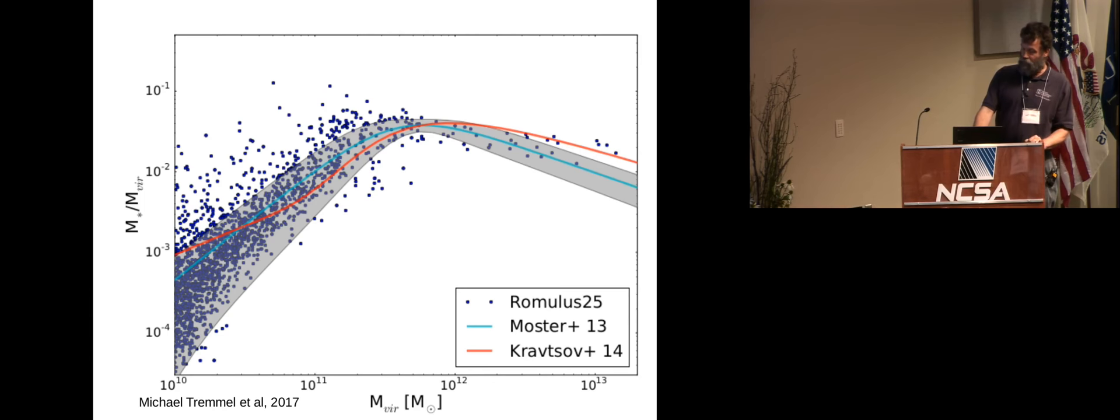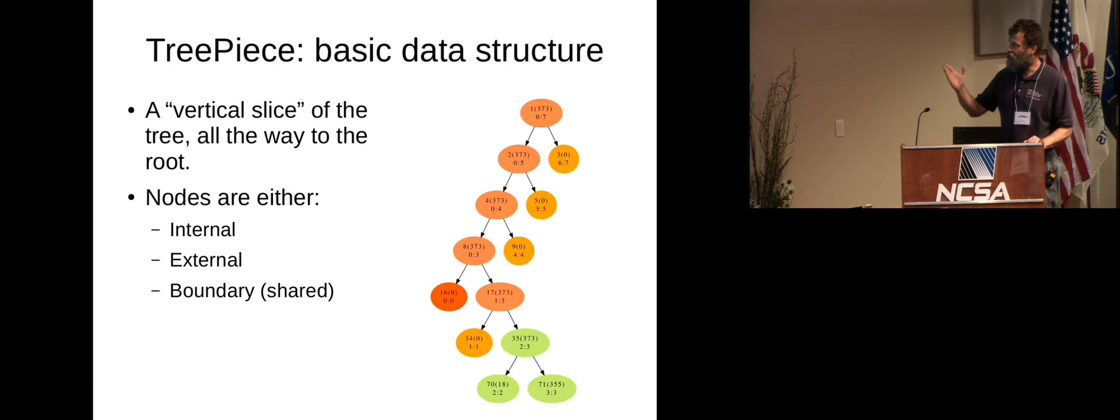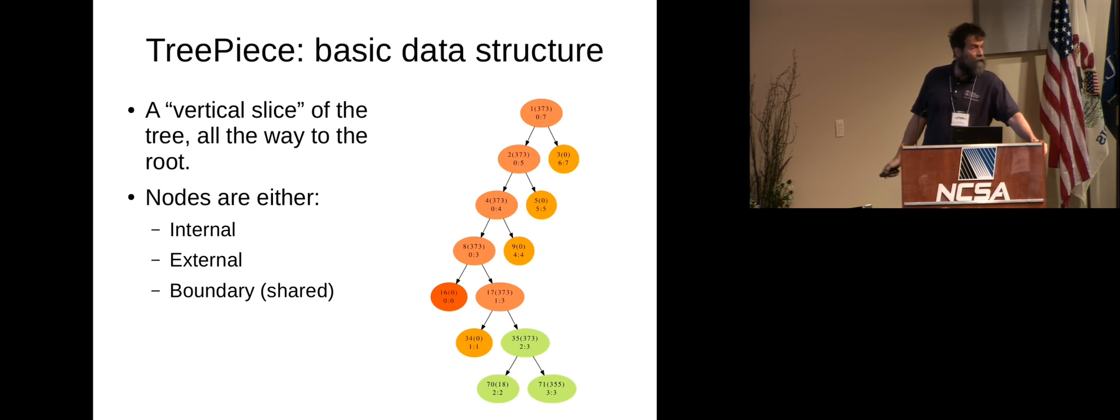A quick review of how we do this: the chares that we're using in Chang'e are these tree pieces, which are essentially a vertical slice of the tree all the way up to the root. Down here, we have nodes that are internal to the tree piece. But as we go up the tree, we get these orange nodes that are actually shared between tree pieces. So everybody does have a copy of the root node. And then, of course, the yellow ones are pointers to off tree piece nodes, possibly off processor.